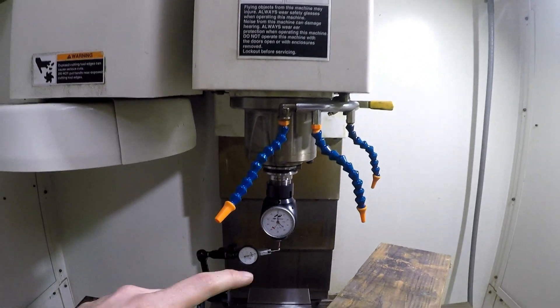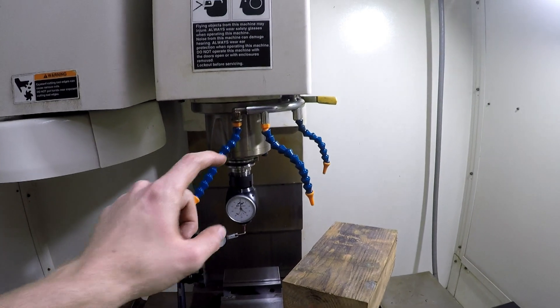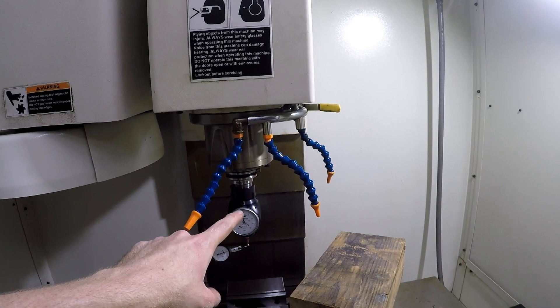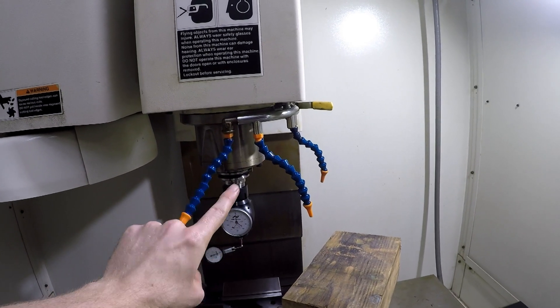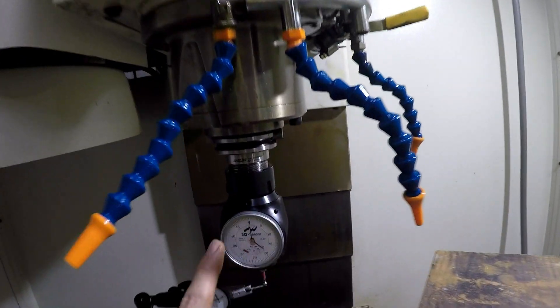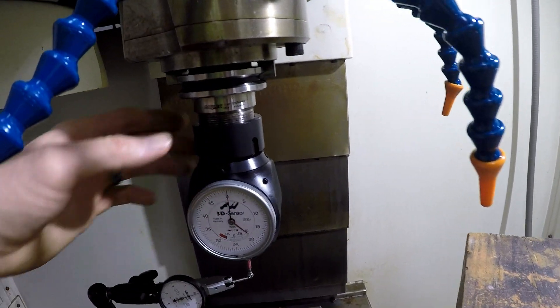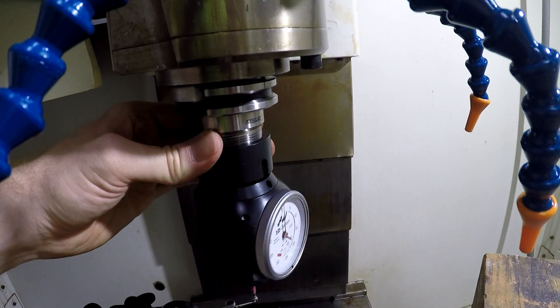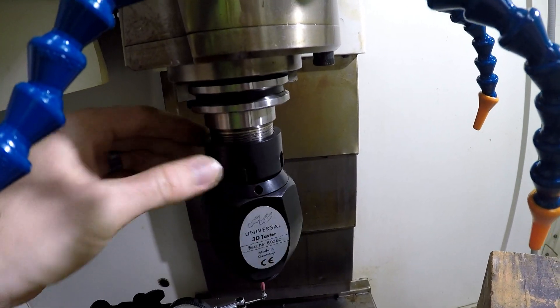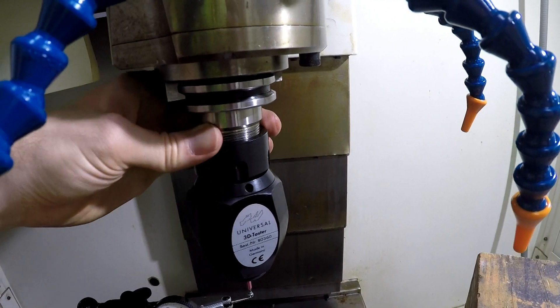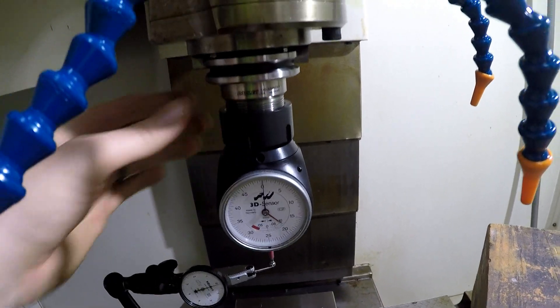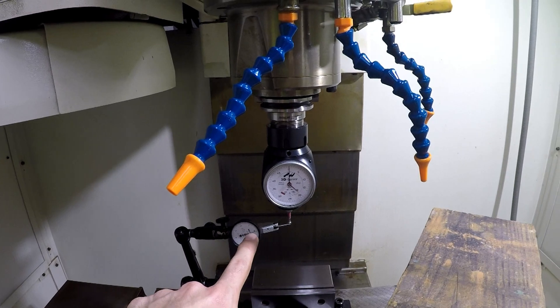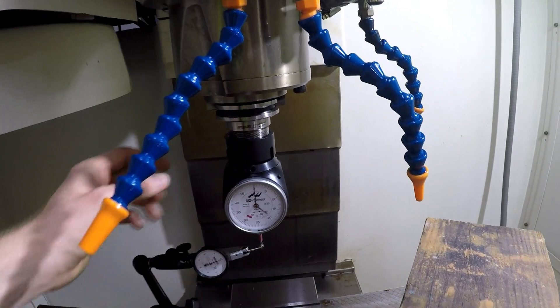So basically just to give a rundown of the procedure. First you install the Hymer probe into a holder, stick it in the spindle, and then you spin it around. First you loosen up all of these set screws, just break them loose. Or I guess first you probably check it to see if it is straight. And then if it's not, then you can break them loose.